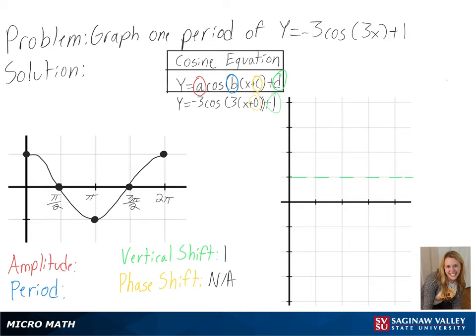Next, we have an amplitude of 3, and we can tell that our graph will have its highest and lowest points 3 units from the center.